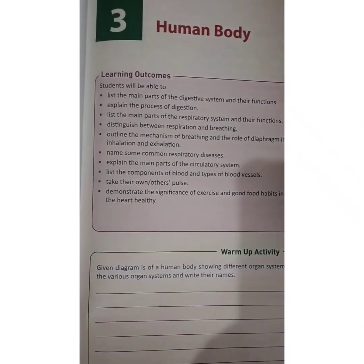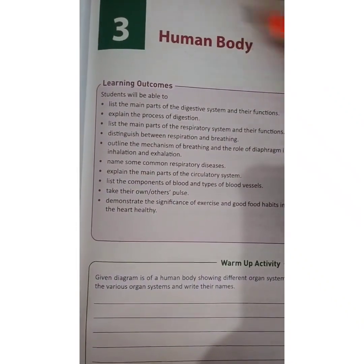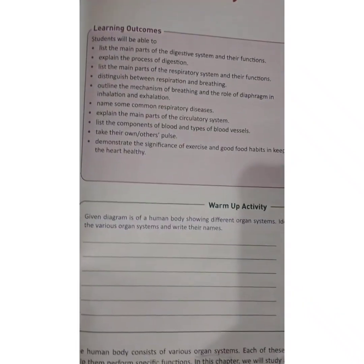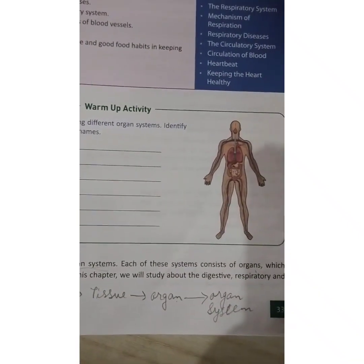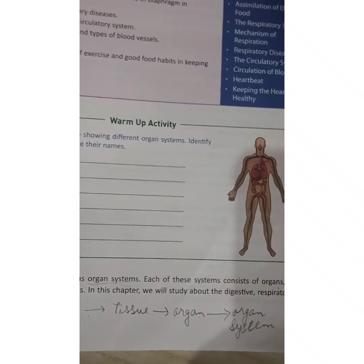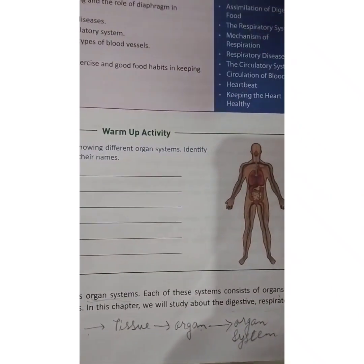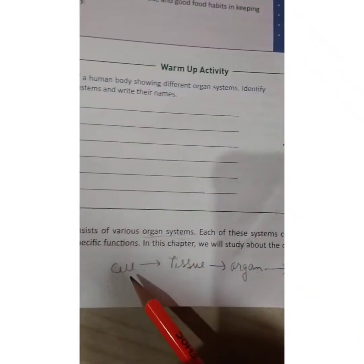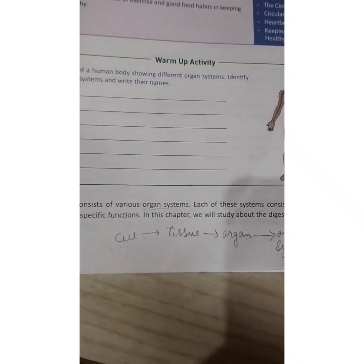Good morning everyone. Today we will start a new chapter — Chapter 3, the Human Body. In the last chapter we read about plant cells and animal cells, but in this chapter we will study about the human body in a more elaborated way. We have seen in the last chapter that a cell is the smallest unit of life that can exist independently.